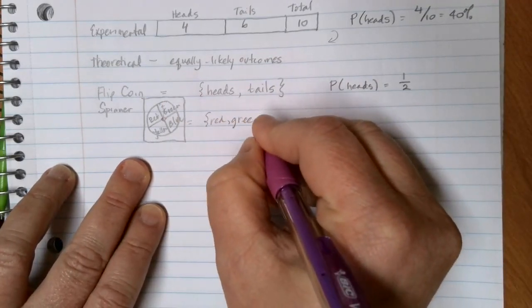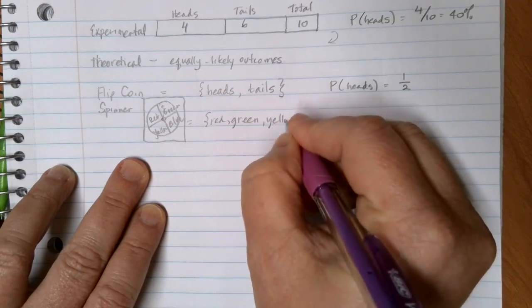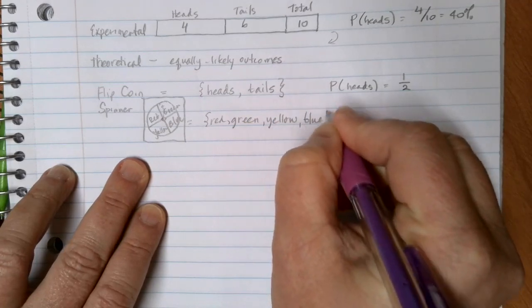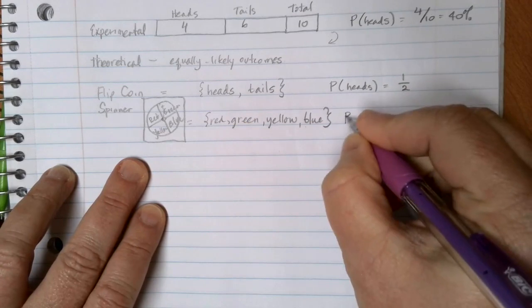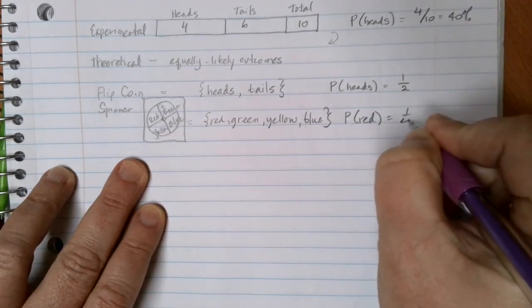red, green, yellow, blue, and the probability of getting any one of those. So let's say the probability of getting red would be one out of four.